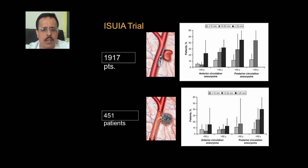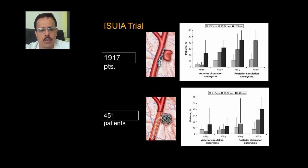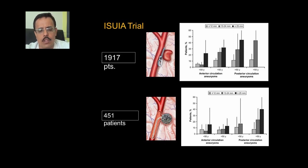The ICYI trials compared the results of coiling versus clipping in patients with large and giant aneurysms. The complication rates of surgery, done in 1,917 patients, were quite high, particularly when aneurysms were large in size, when the patient's age was more than 50 years, and when they were in the posterior circulation. Comparatively, in the coiling group, the complication rates were much lower, but the problem has been that they tend to come back.